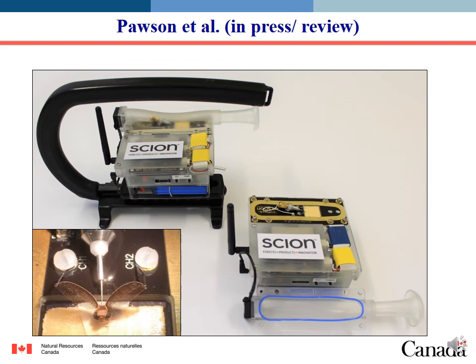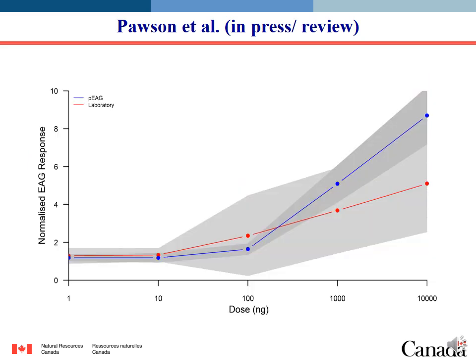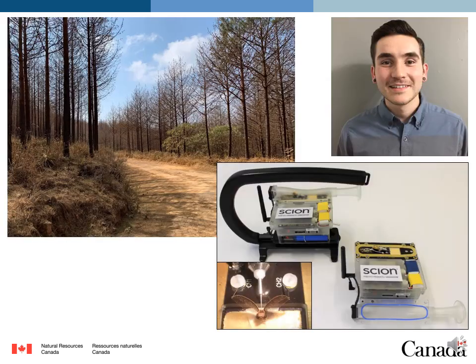The approach we've taken is to work with colleagues in New Zealand who have developed a mobile EAG device. What is special about this device is how small and light it is — small enough to be carried by hand — so you can move around in space and begin to understand how odor plumes change in space and time, and how far from a point source a moth can detect the pheromone. The moths are live and mounted, which has several advantages for preparation. This figure shows that this handheld device is as sensitive as the lab-based version, making it a remarkable tool offering incredible opportunity to explore active spaces and how trap design or stand structure might influence them.